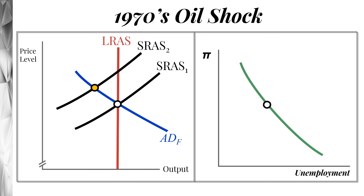When the short-run aggregate supply curve is pushed back and to the left, what happens to unemployment? Unemployment is going to rise. What happens to the price level? The price level is going to rise. When we move from our original equilibrium to the new equilibrium following this negative shock — when the short-run aggregate supply curve moves back and to the left — we have a situation with higher unemployment and a higher price level, or inflation.